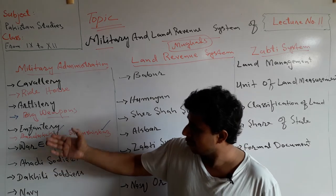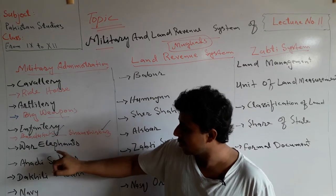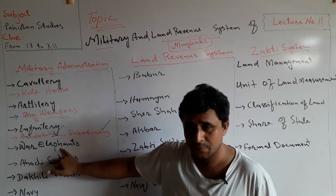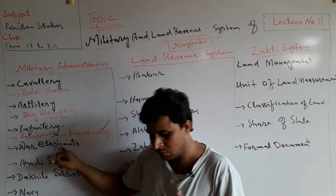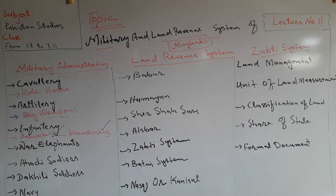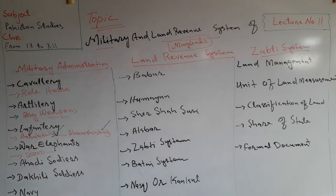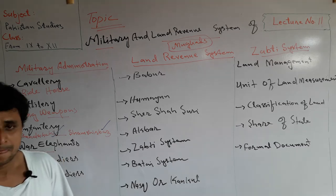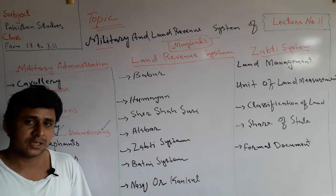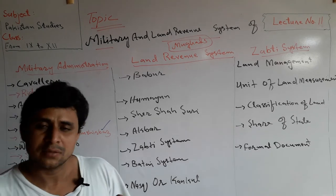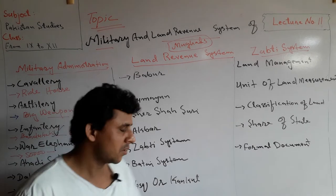The Mughals also used elephants during war. There were 50,000 elephants that Akbar collected, because Akbar was responsible for making the Mughal army strong.